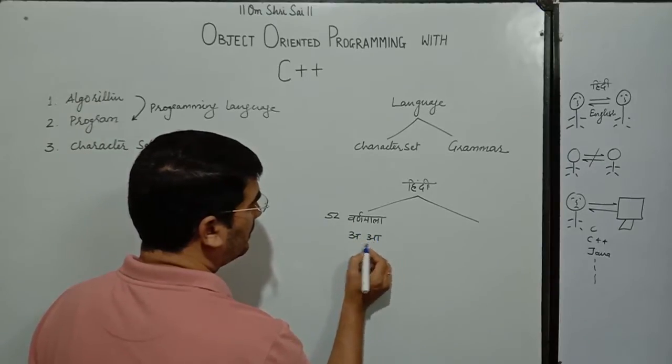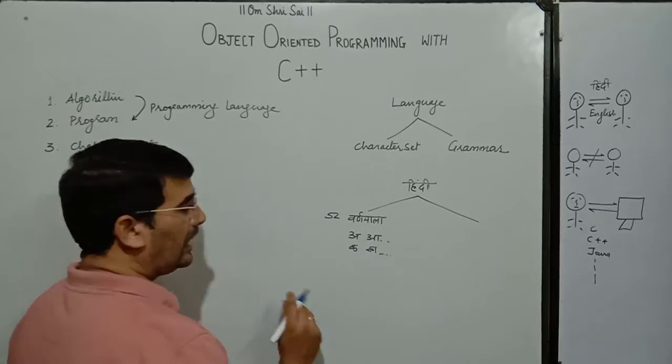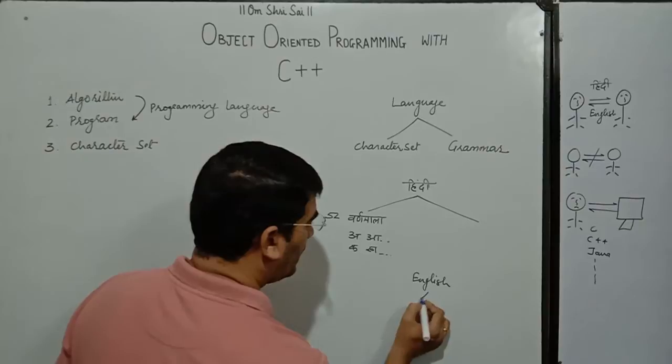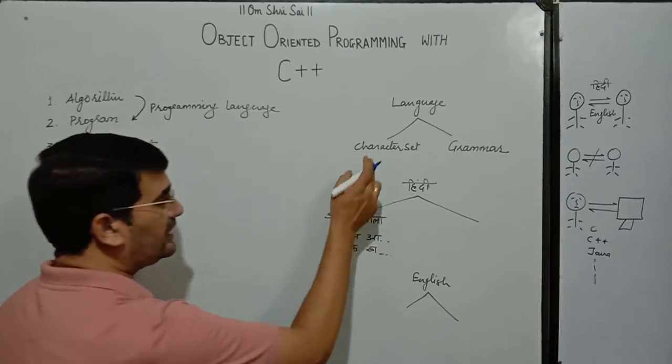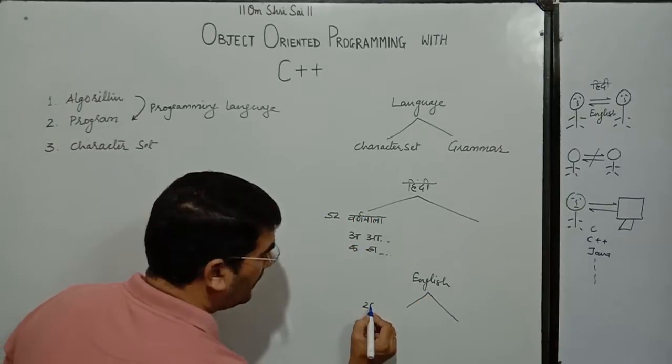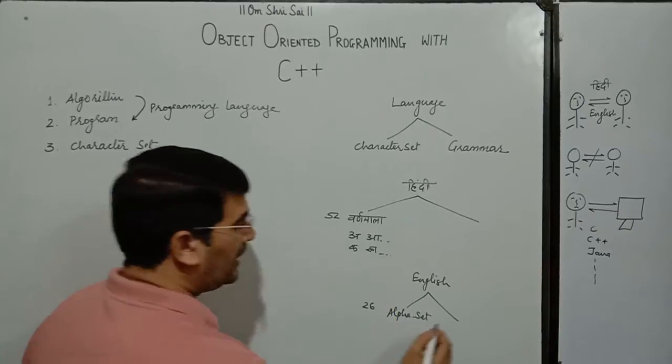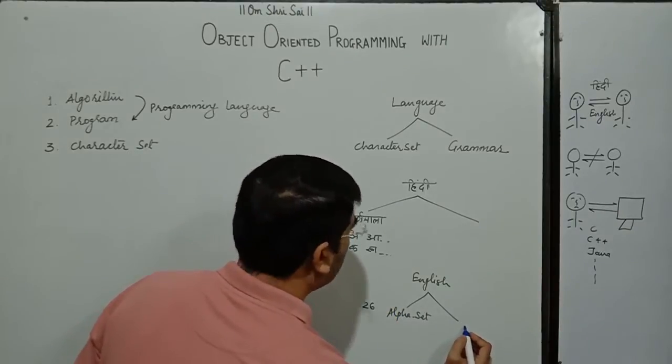And the name of that character set is varnmala consisting of 52 characters containing A, A, E, E, K, K, G, G, and so on. And the remaining part will be grammar. Now, if we talk about English, the English language has its own predefined character set consisting of 26 characters and it is known as alphabet set. And the remaining part will be the grammar.